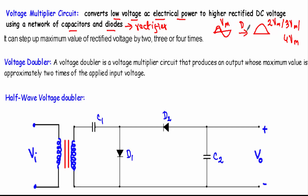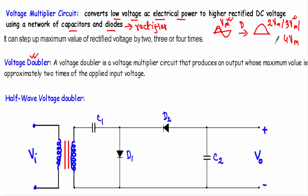If the rectified DC output voltage is two times the maximum value of the input voltage, that circuit is known as a voltage doubler circuit. If the output voltage is three times the maximum value it is called a voltage tripler circuit, and if the output is four times the input it is called a voltage quadrupler circuit.